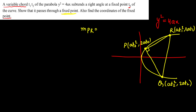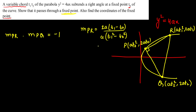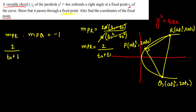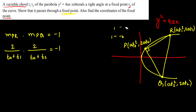We can use the family of straight lines approach. The slope of PR is (2at1 − 2at0) / (at1² − at0²). Factoring and cancelling, m(PR) = 2 / (t0 + t1). Similarly, m(PQ) = 2 / (t0 + t2). Since PR and PQ are perpendicular, m(PR) × m(PQ) = −1, giving us 4 / [(t0 + t1)(t0 + t2)] = −1.